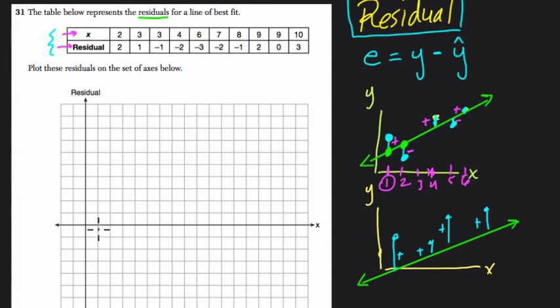So if we plotted these out, let's see what happens. So 2, 2 is the point here. 3, 1 is here. 3, negative 1 is here. Because it's possible to have multiple points at one independent variable. We have no idea what this data is based on. 4, negative 2 is here. And then 6, negative 3 is here. 7, negative 2 is here. 8, negative 1. 9, 2. 9, 0. And 10, 3.